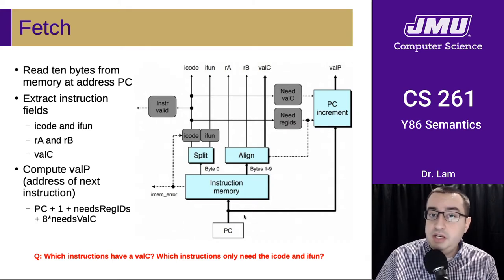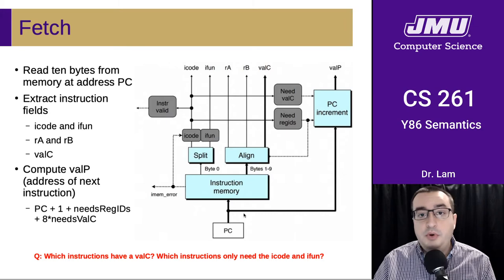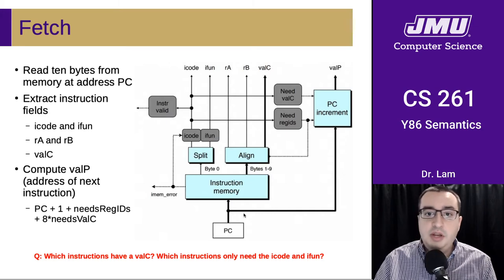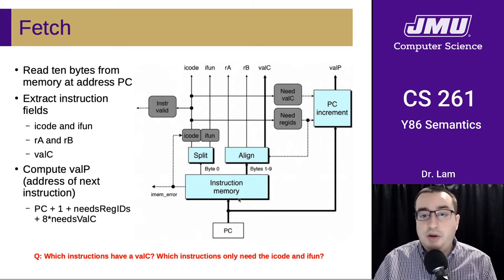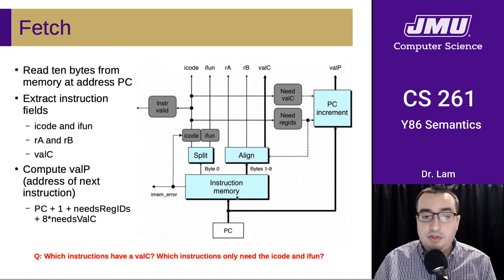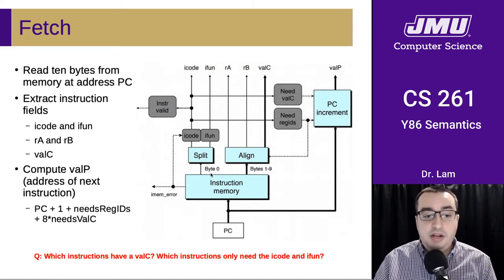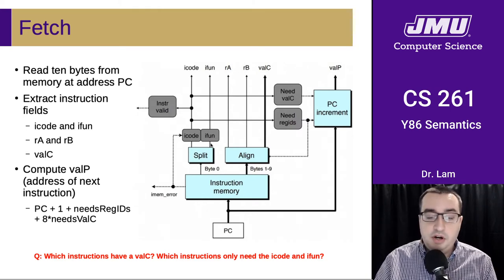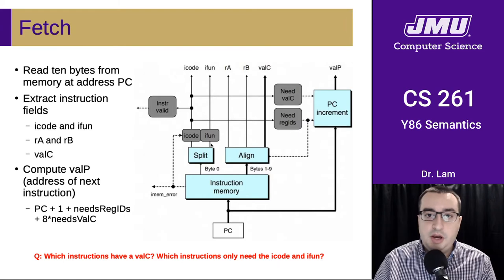We don't necessarily need all those bytes, but we'll go ahead and read them anyway in case we need them. We definitely will need byte zero — that's where we'll extract the iCode and the iFun, which are various pieces of information about what kind of instruction we're doing.